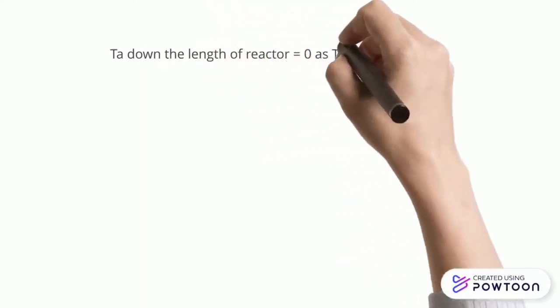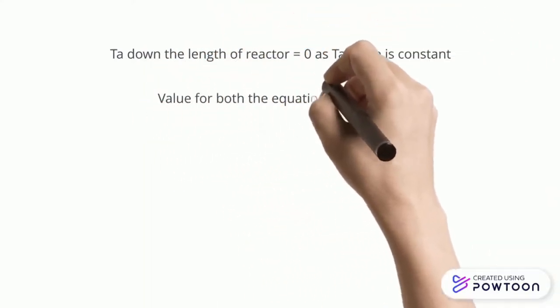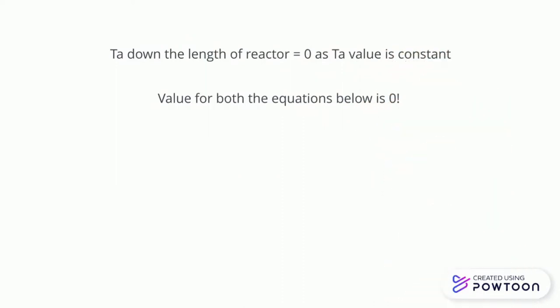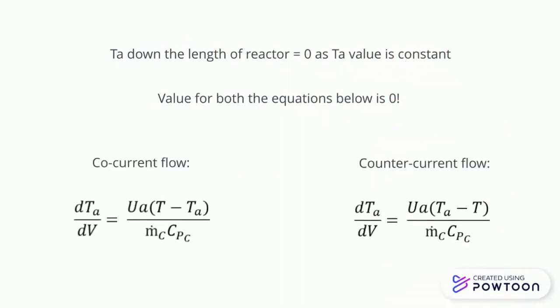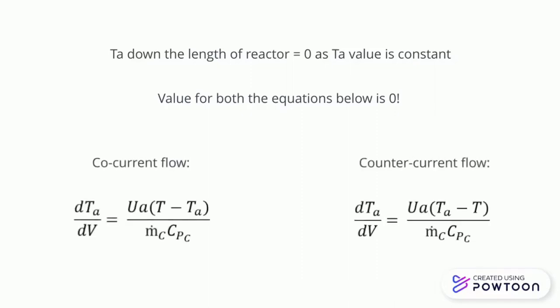Since the TA value is constant, the variation of fluid temperature TA down the length of reactor is always equal to 0. The value for both co-current flow and counter-current flow equations is 0 for constant heat transfer fluid temperature TA, thus this is negligible. This is the equation for co-current flow and this is the equation for counter-current flow.